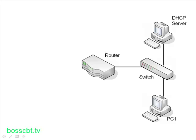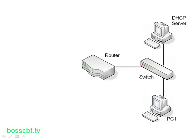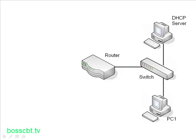The client, on the other hand, is PC1 in this scenario. This is a client-server relationship. The client is responsible for initiating the process when it needs to get IP information from a DHCP server — the server doesn't initiate it, the client does. A client can be anything: a PC, a router, or a switch. Many devices can be capable of utilizing DHCP, not just a PC.